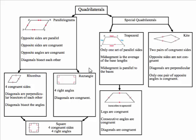In this video we're going to be taking a look at the properties of quadrilaterals. The quadrilaterals we'll be taking a look at are parallelograms, rhombuses, rectangles, squares, trapezoids, kites, and the special type of trapezoid: isosceles trapezoids.